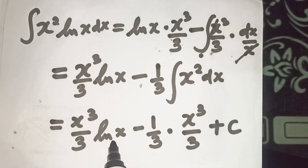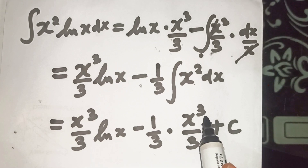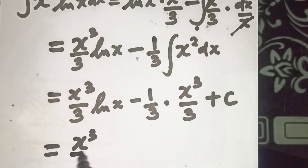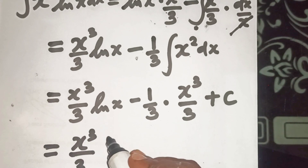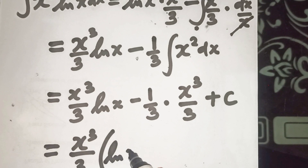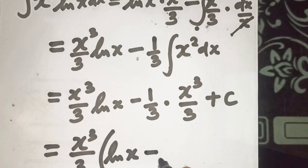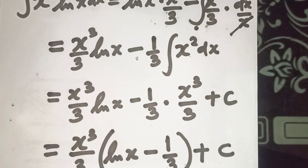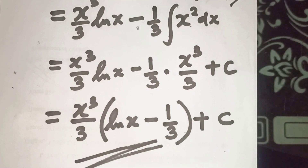x³/3 is common to both terms, so we can write the result as x³/3·(ln(x) − 1/3) plus c. This is the result of evaluating the integral of x²·ln(x) dx using integration by parts.